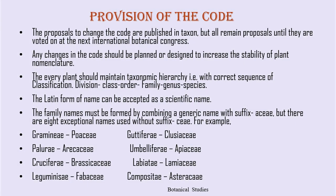Provisions of the code: Proposals to change the code are published in Taxon, but all remain proposals until they are voted on at the next International Botanical Congress. Any change in the code should be designed to increase the stability of plant nomenclature. Every plant should maintain taxonomic hierarchy — the correct sequence of classification: division, class, order, family, genus, species. The Latin form of the name can be accepted as a scientific name. Family names must be formed by combining a generic name with the suffix '-aceae'.